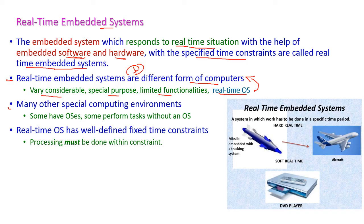Many other special computing environments are also available. Some systems have a full OS, while others perform tasks with only a limited subset of OS functionality installed. Real-time OS defines fixed time constraints — processing must be completed within those constraints. These are examples of real-time embedded systems.